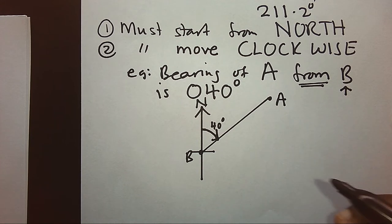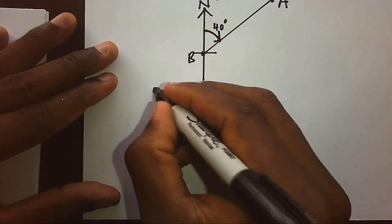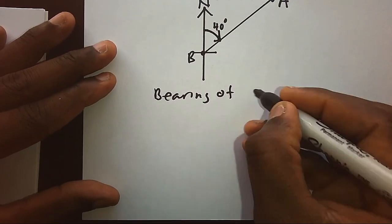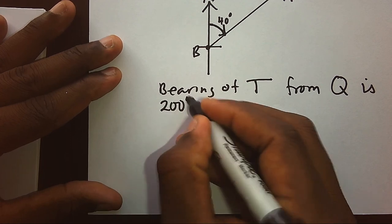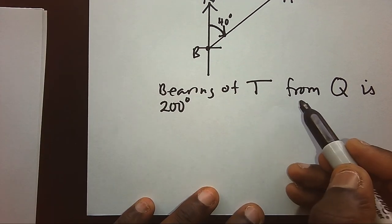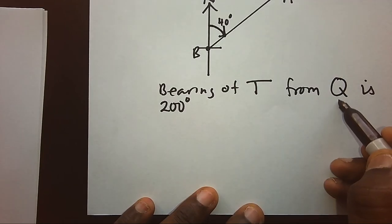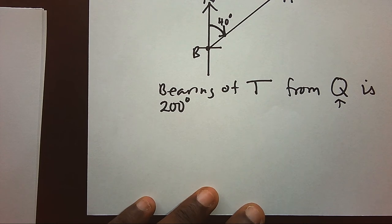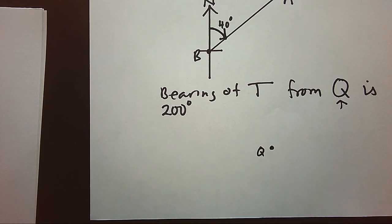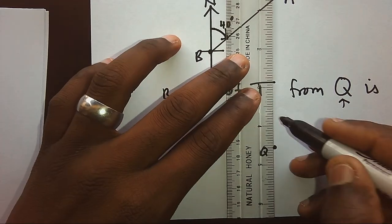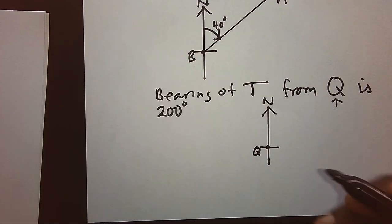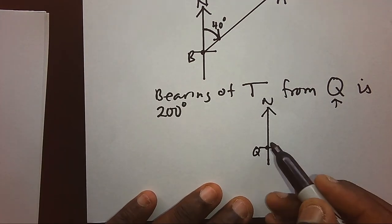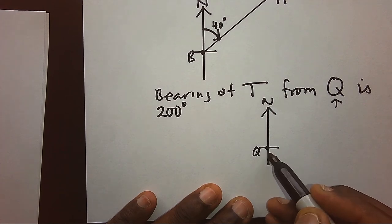Another example: bearing of T from Q is 200. The word 'from' clearly tells us that we have to be positioned at Q. Let's say my Q is there. Now if we do anything we have to keep our north. And after keeping our north we have to estimate the 90s, and everybody can see here is a 90, another 90, another 90, and another 90.